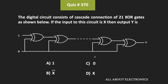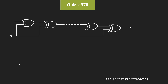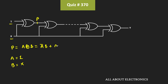The input to this circuit is X, and we need to find the output. Starting with the first XOR gate: one input is equal to 1 and the second input is equal to X. Let's say the output of the first XOR gate is P. This P can be given as A XOR B, where A equals 1 and B equals X. A XOR B can be expressed as Ā·B + A·B̄.